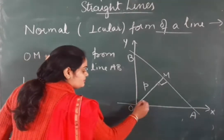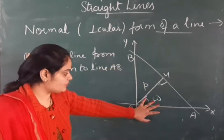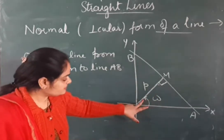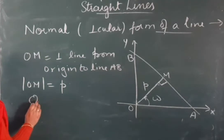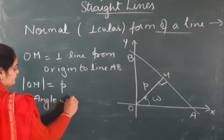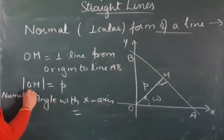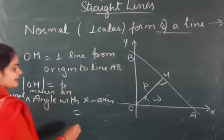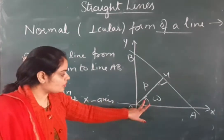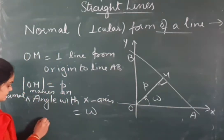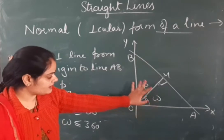This normal makes one angle. Let's take this angle as omega — you can also take theta, whichever you prefer. This normal makes an angle omega with the x-axis. So p is the perpendicular distance and omega is the angle which the normal makes with the x-axis. Omega should lie between 0 to 360 degrees, since this is a coordinate plane and the angle can move up to 360.